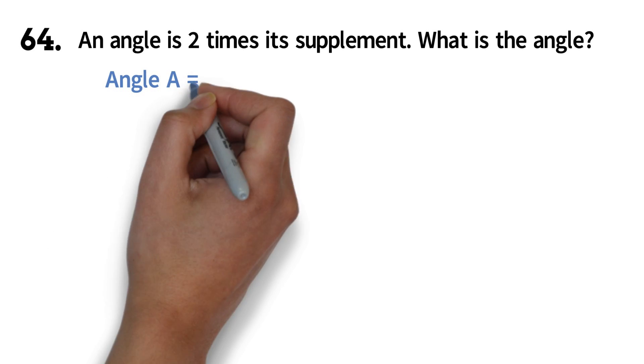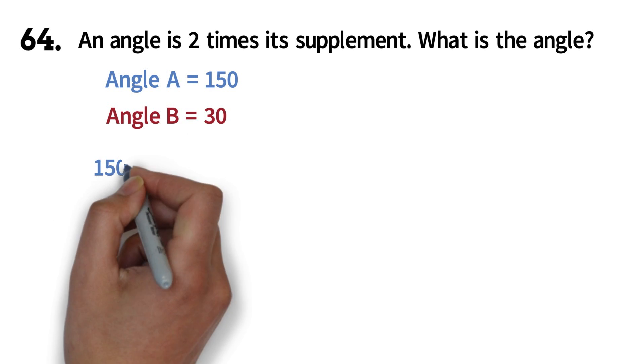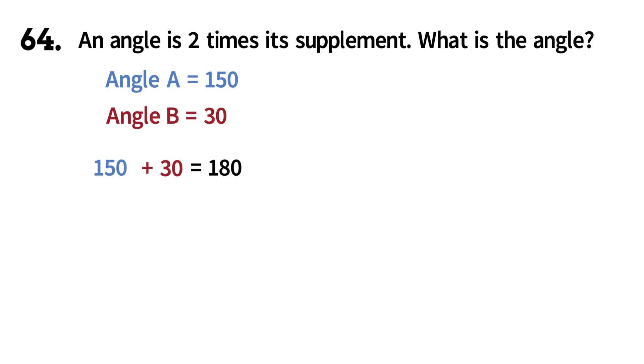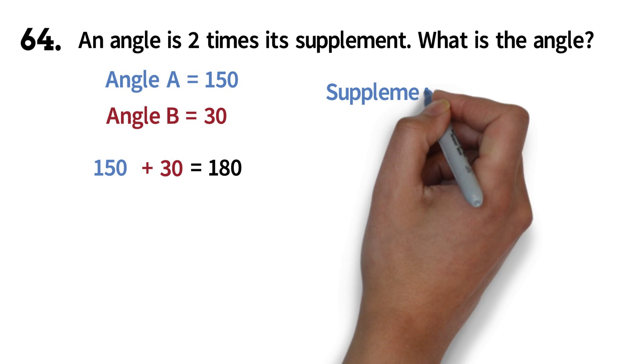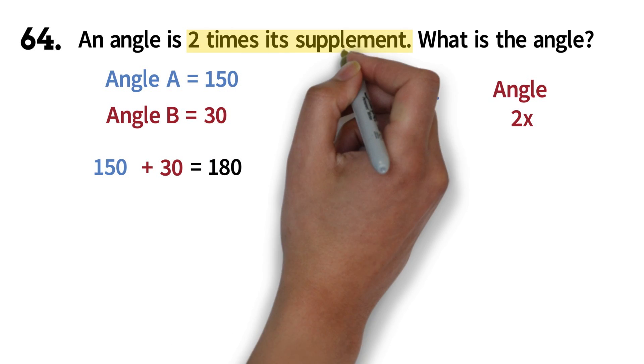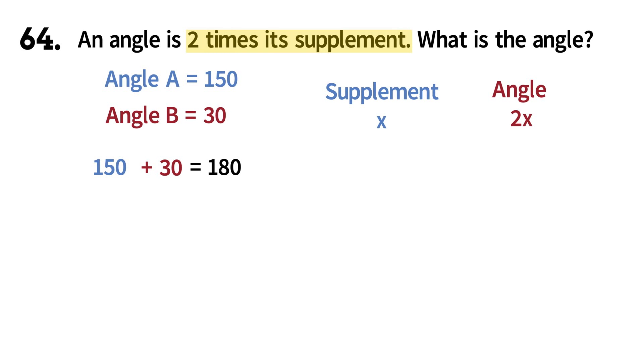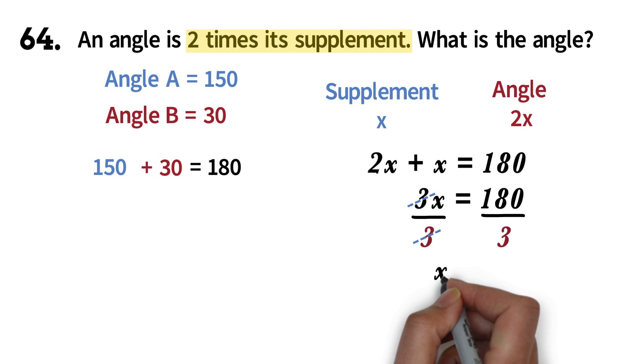So if angle A is, let's say, 150 degrees, then angle B must be 30 degrees. 150 plus 30 equals 180. So for this question, if we say the supplement is x, then the angle will be 2x because it is 2 times the supplementary angle. We say that they must add up to get 180 degrees. So we have 2x plus x equals 180. We add the x plus 2x to get 3x equals 180. We can now divide both sides by 3. The 3 will cancel out. 180 divided by 3 is 60. So x equals 60.